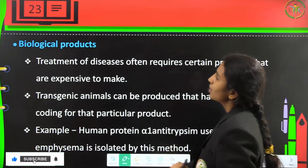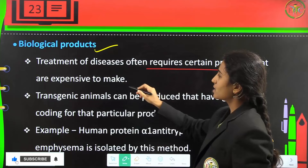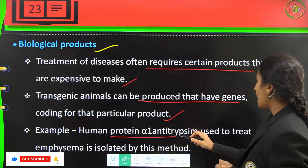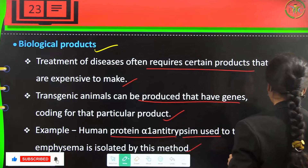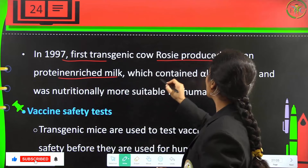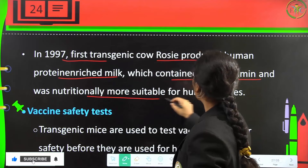Next is biological products. Treatment of diseases often requires certain products which are expensive to make, so transgenic animals can be produced with genes coding for that particular product. For example, human protein alpha-1 antitrypsin used to treat emphysema is isolated this way. In 1997, the first transgenic cow, Rosie, was produced and yielded human protein-enriched milk containing alpha-lactalbumin, which was nutritionally more suitable for human babies.